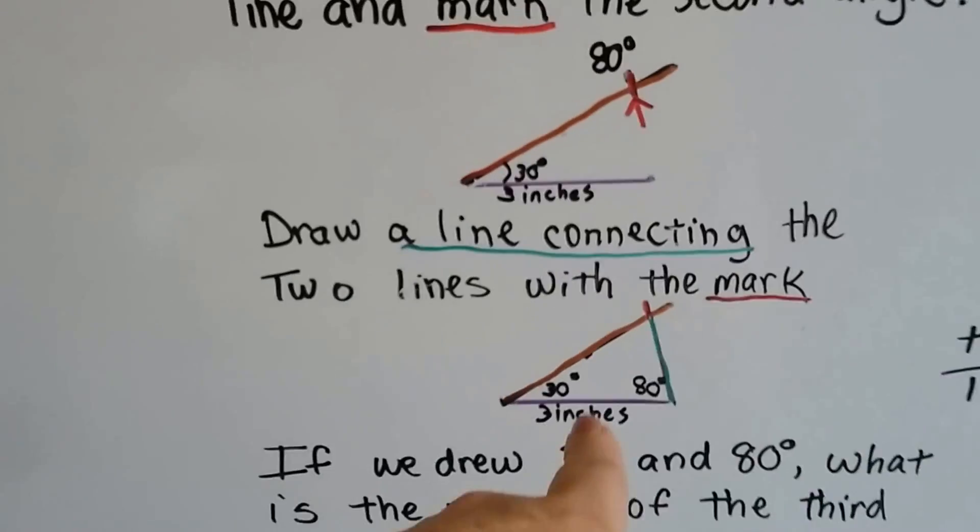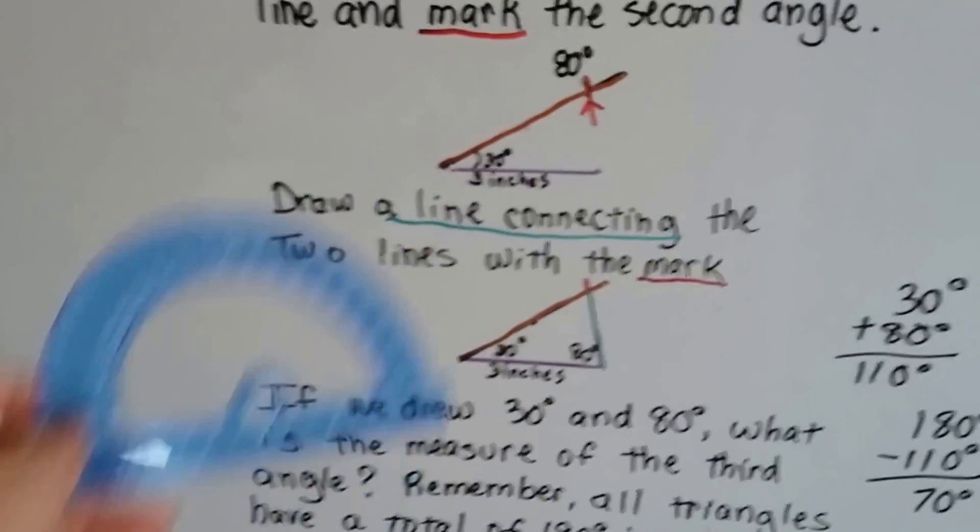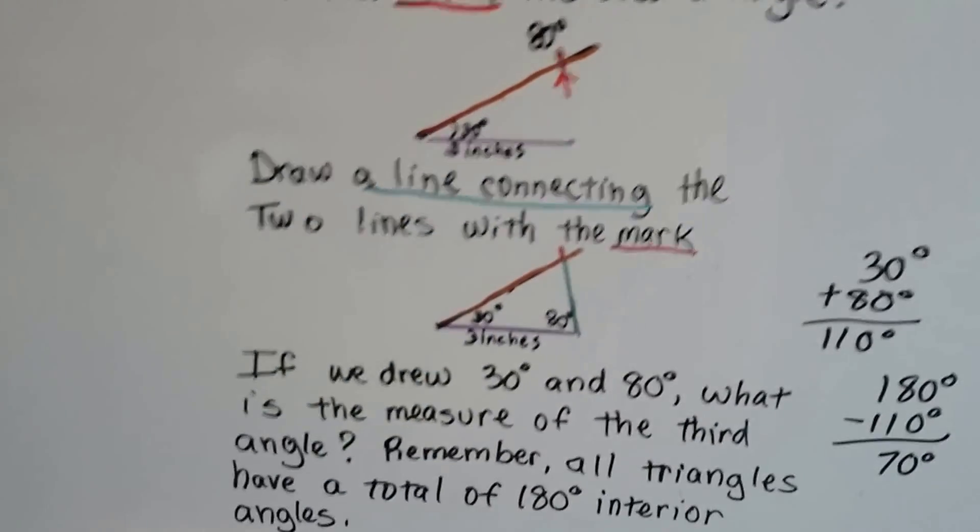And it's right there. Then we can just take the straight edge and draw the line. And the line connecting it to the mark makes our triangle.